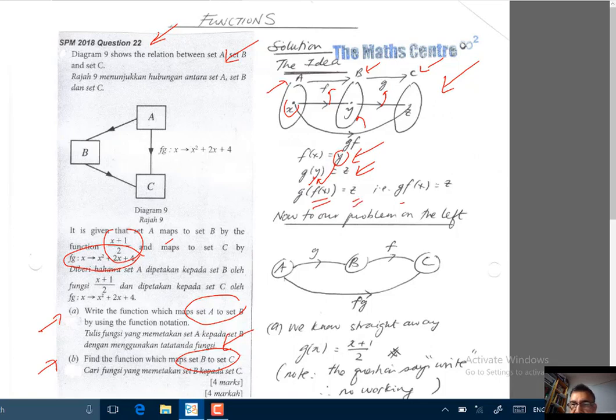So G of F of X equals to what? Z. So we can write G of F of X equals to Z. So you see G of F of X here. So you see F here and you see G here.